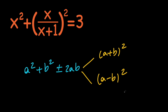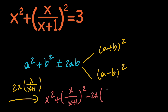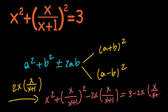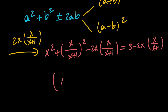Let's go ahead and use this to complete the square on the left hand side of our equation. In this case, we're going to subtract an expression. So let's subtract 2x times x over x plus 1. If we do that, we get x squared plus x over x plus 1 all squared, minus 2x times x over x plus 1. Notice that we need to subtract this from both sides to balance the equation, so on the right hand side we get 3 minus 2x times x over x plus 1. The left hand side is now a perfect square: the quantity x minus x over x plus 1, all squared.